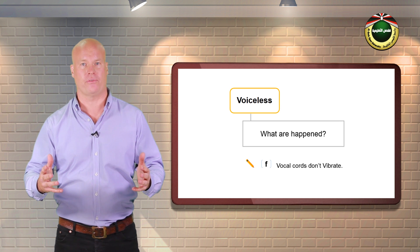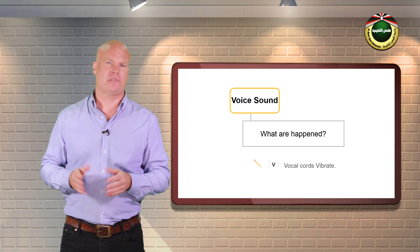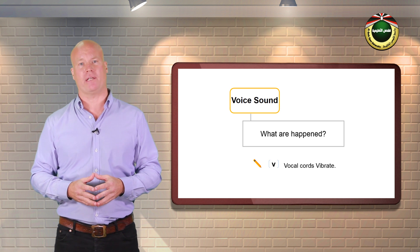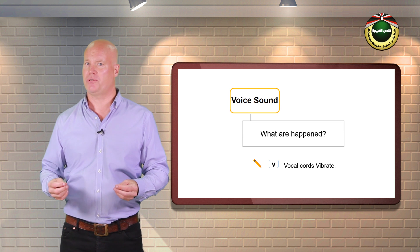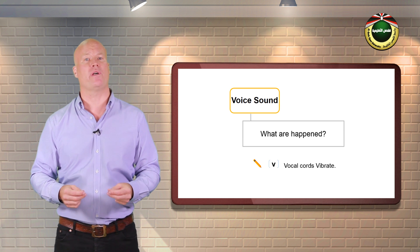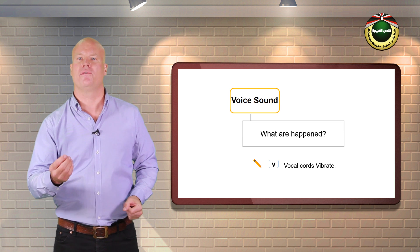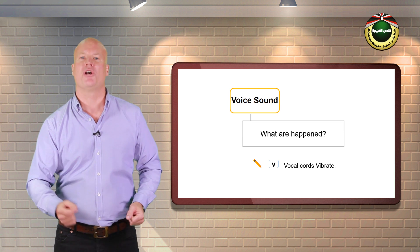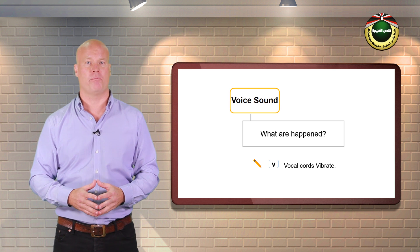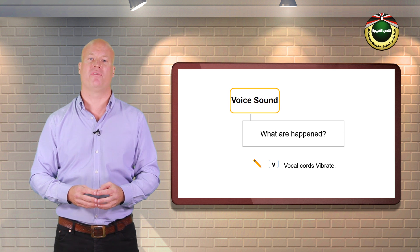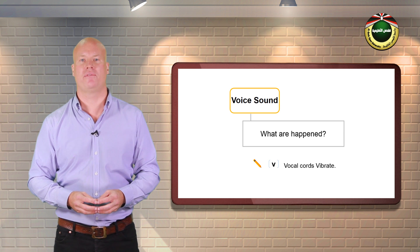Try ff. However, if the cords are held tightly together, they vibrate as the air forces its way through them. The sounds produced in this way are called voiced sounds, like vvv. Try vvv. Notice that f is voiceless but v is voiced, as in ff and vvv.